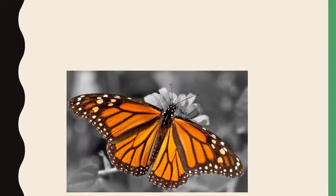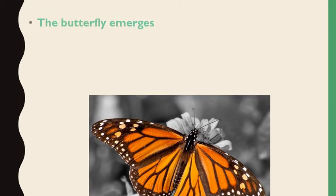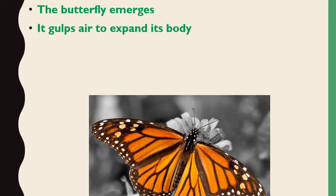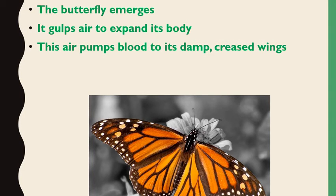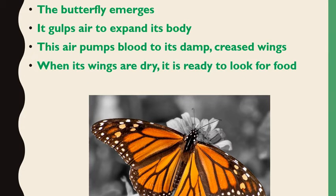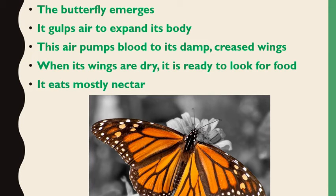The butterfly. The butterfly emerges. It gulps air to expand its body. This air pumps blood to its damp, creased wings. When its wings are dry, it is ready to look for food. It eats mostly nectar.